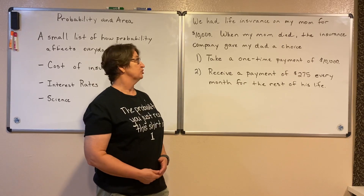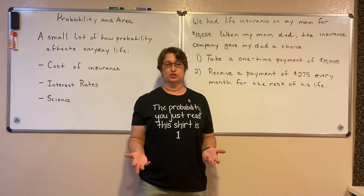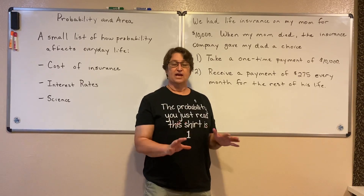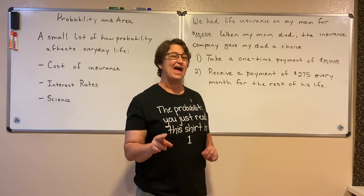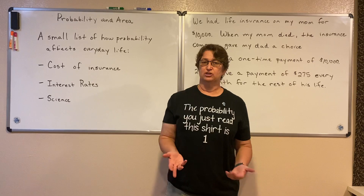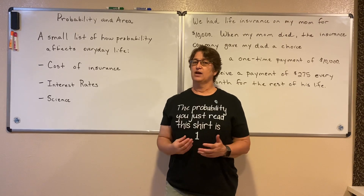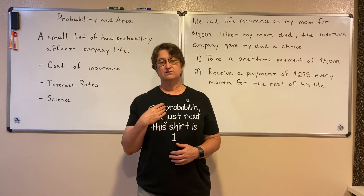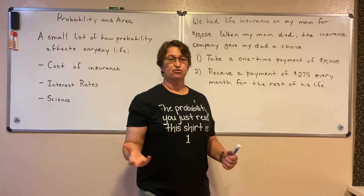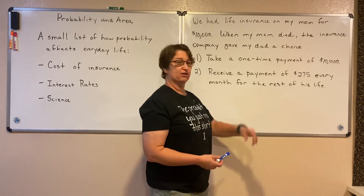We had a life insurance on my mom for $10,000. And when my mom died, the insurance company gave my dad an option. They said, you can have a one-time payment of just $10,000. Or instead, what we'll do is we'll pay you $275 a month for the rest of your life. So we had to stop and think about why the insurance company was doing that — what was making them want to give him $275 for the rest of his life every month rather than the $10,000, and then we had to make a decision on which we were going to do.